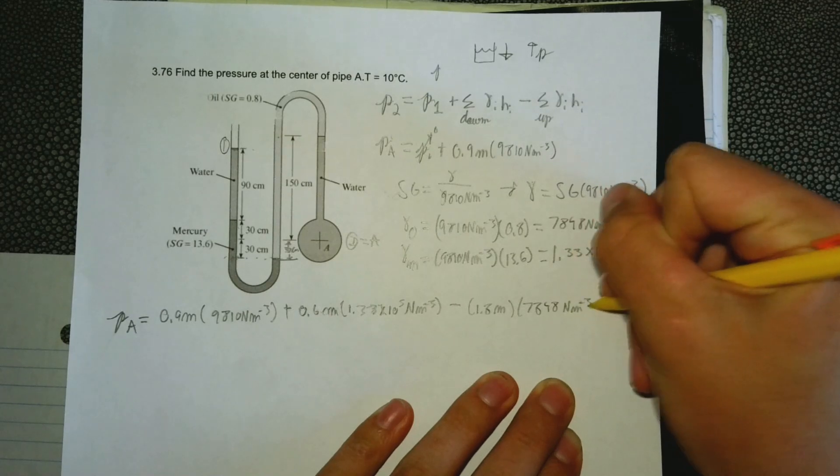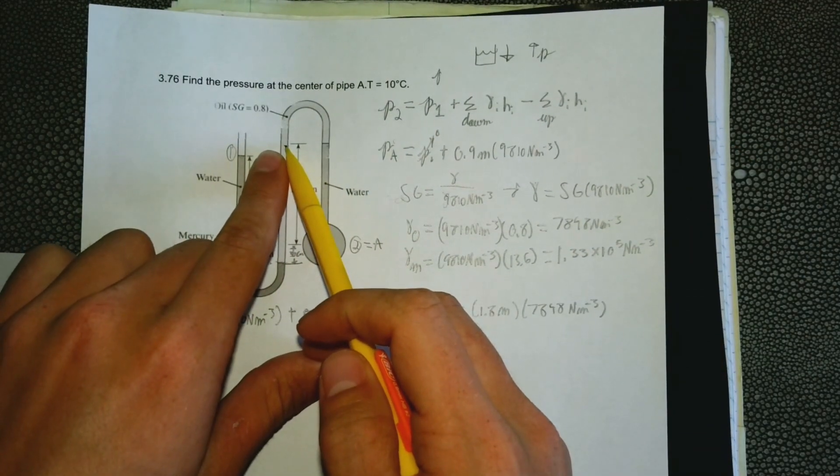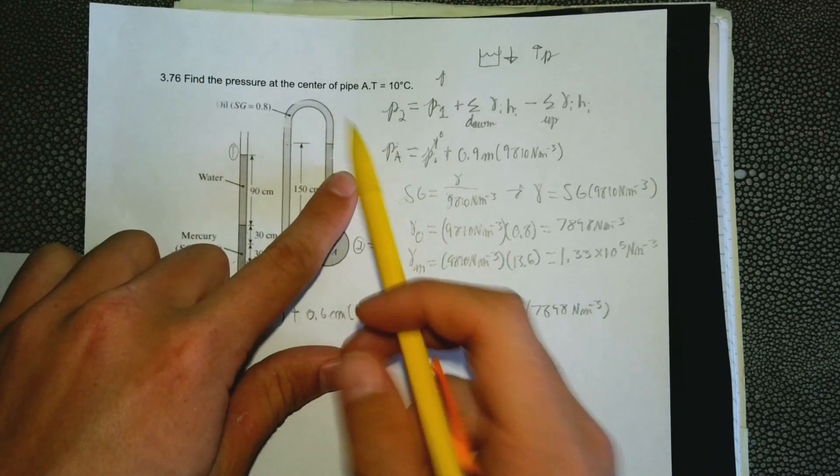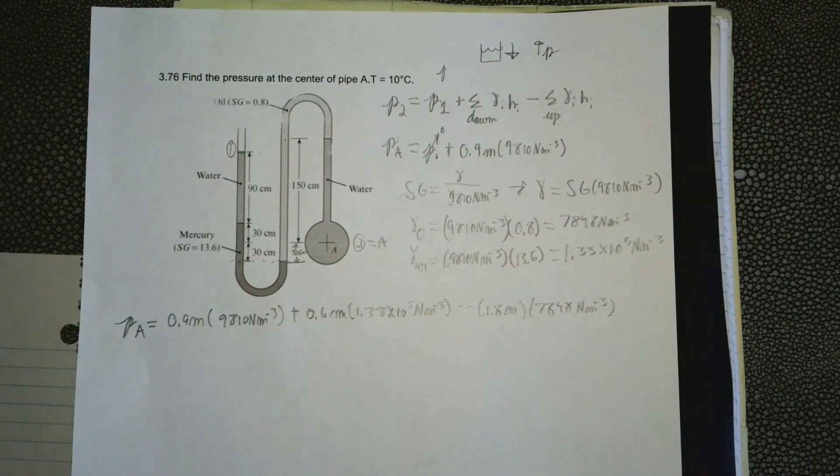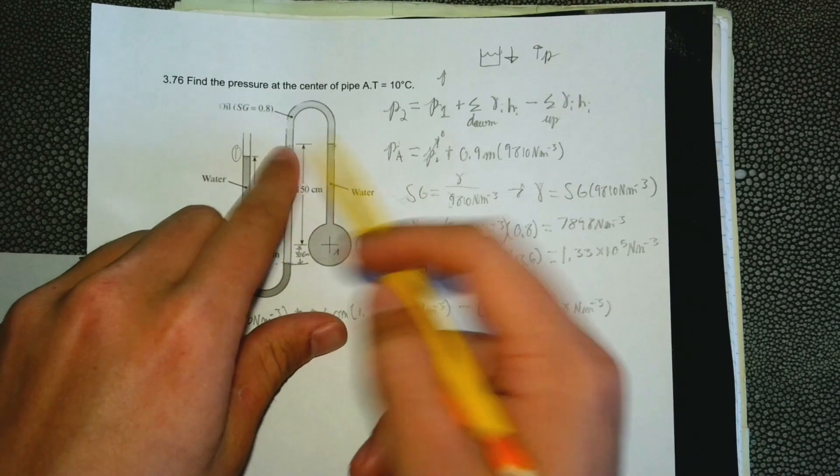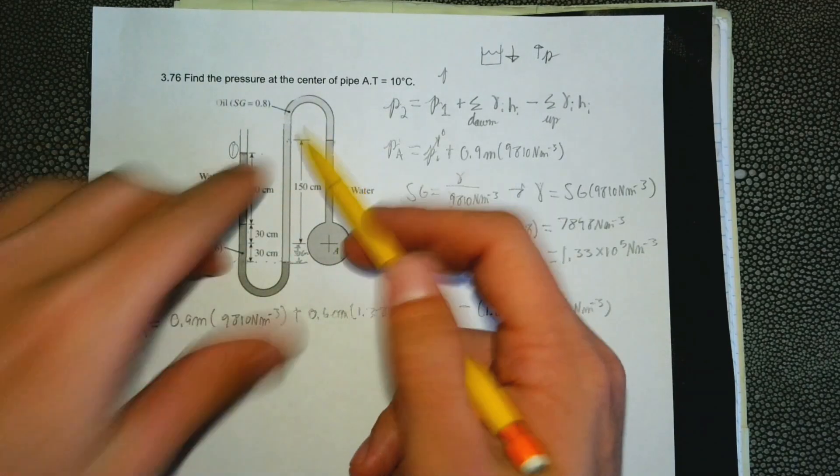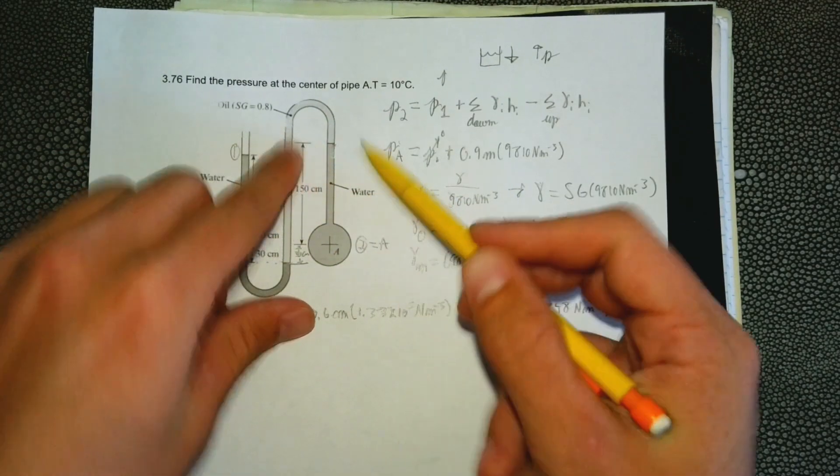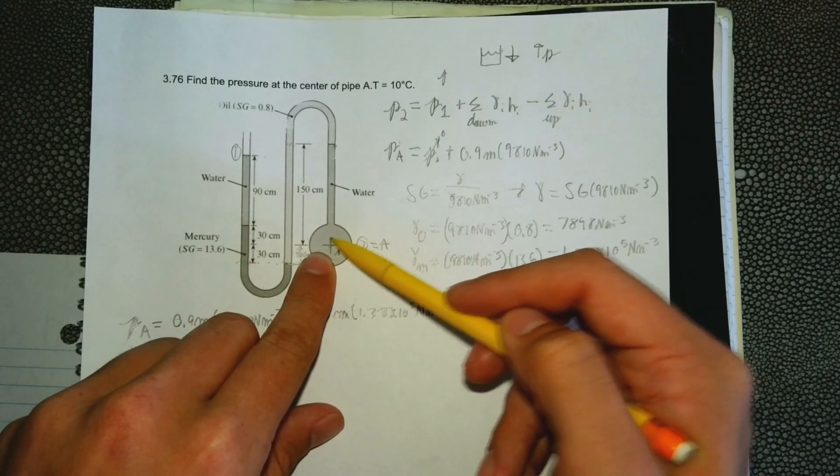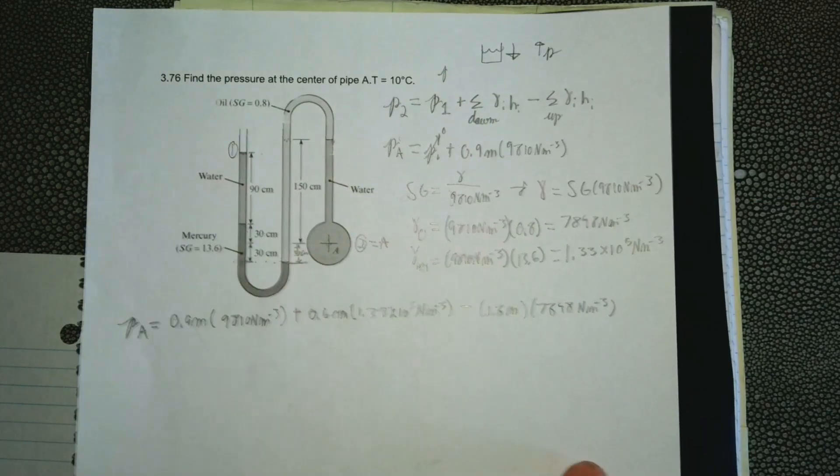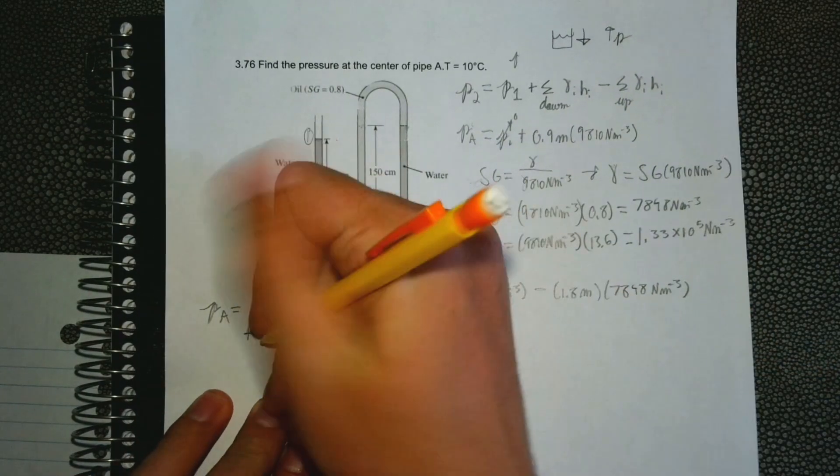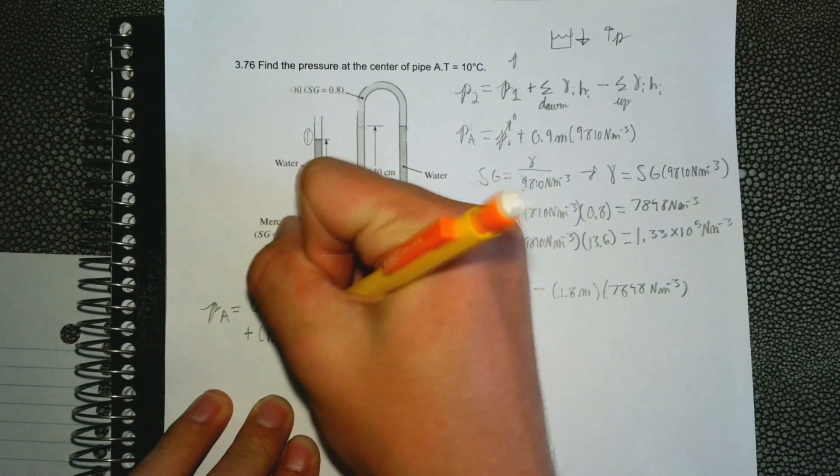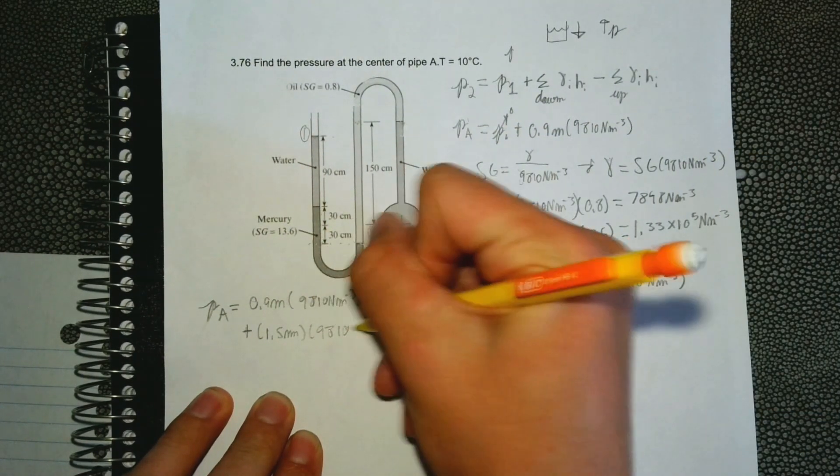Now we're here. You can use that fluid interface rule and move it over to get here. The fluid interface rule says you can move horizontally between two points and have the same pressure. So we're here, move over here, and now we got to move down 150 centimeters to get to pressure at point A. Since we're going down, we're going to add. We're in water, so do 1.5 meters, 150 centimeters, times we're in water, so specific weight is this.